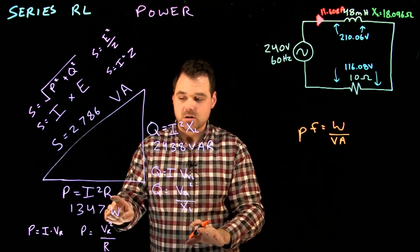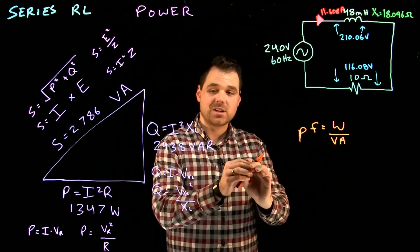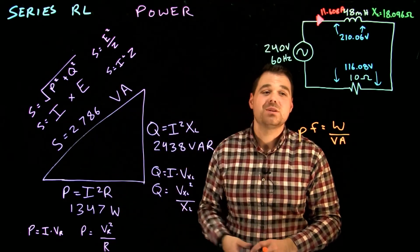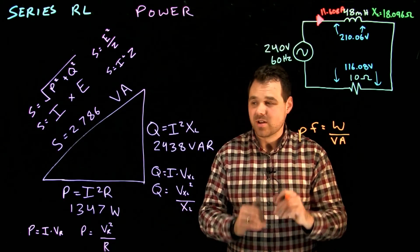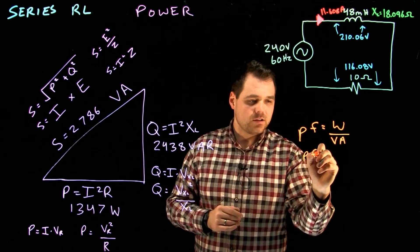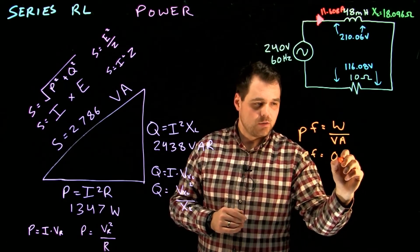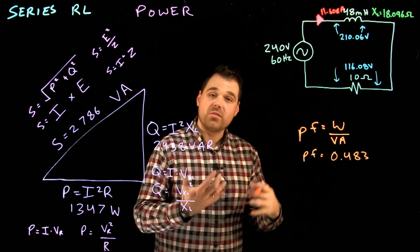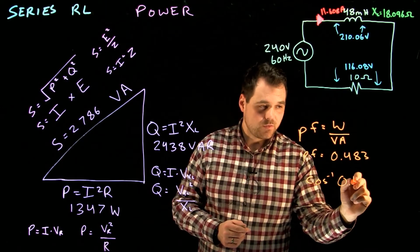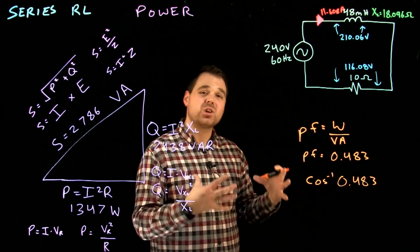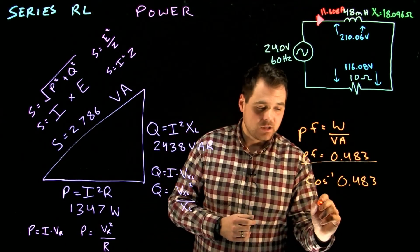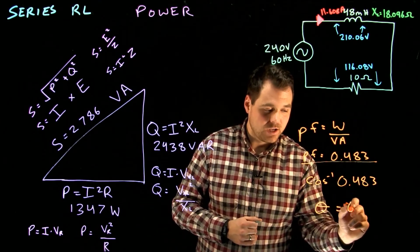P or R times I squared gives us power. XL times I squared gives us Q. So that would work as well. You can use it there. You can also do it in the voltage triangle because it's all those values times current. We'll fill in your values here. In this case we get a power factor of zero point four eight three. And if we type into our calculator arc cos zero point four eight three it will tell us our power factor angle. So this is a power factor. Always between zero and one. In this case we can get a power factor angle of 61 degrees.